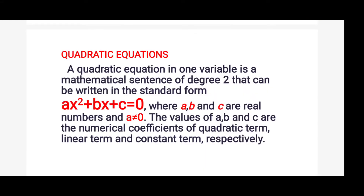Let us first define a quadratic equation. A quadratic equation in one variable is a mathematical sentence of degree 2 that can be written in the standard form ax squared plus bx plus c is equal to 0, where a, b, and c are real numbers and a is not equal to 0. The values of a, b, and c are the numerical coefficients of the quadratic term, linear term, and constant term respectively. Therefore, it is a quadratic equation if the degree of the equation is 2 or the highest exponent is 2.